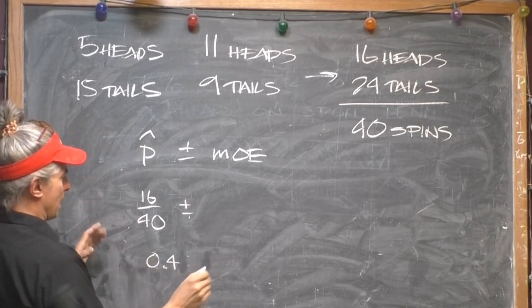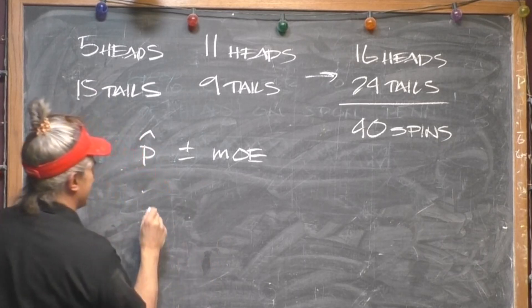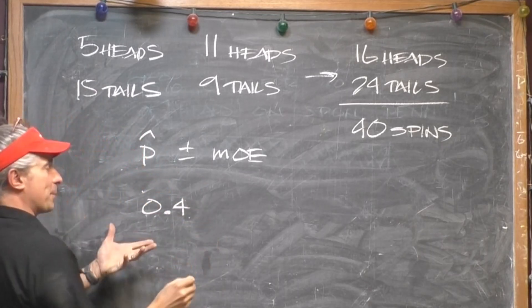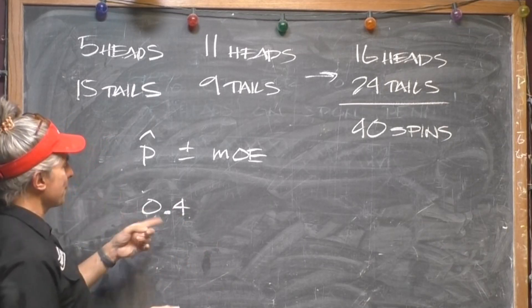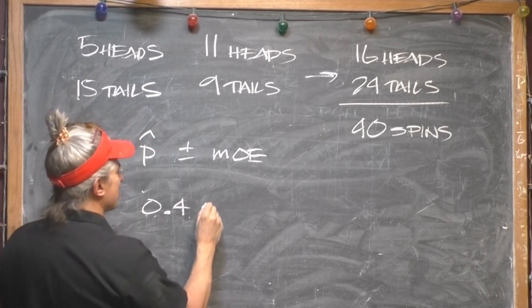Plus or minus, I just come down here, I'll just use the decimal, .4. So 40% heads, which is closer to 50% now, closer than that 25% we had before. Anyway, 40% heads, okay, plus or minus.